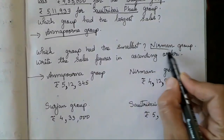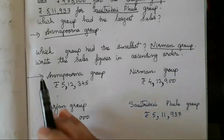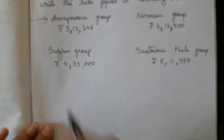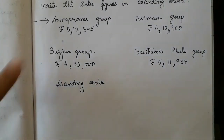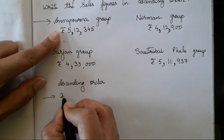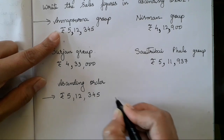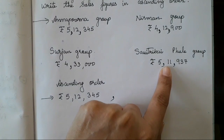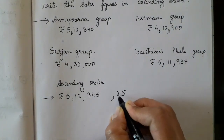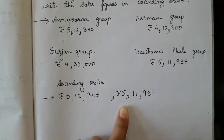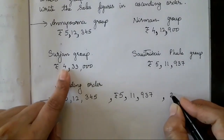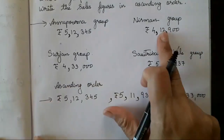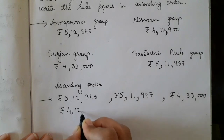Both your answers come from the question we have written. One more question: write the sale figures in ascending order. Ascending order means from bigger to smaller. So, Annapurna is the biggest — rupees 5,00,12,345 comes first. After that, five lakh eleven thousand nine hundred and thirty-seven. Then, rupees four lakh thirty-three thousand. And at the last, four lakh twelve thousand nine hundred.